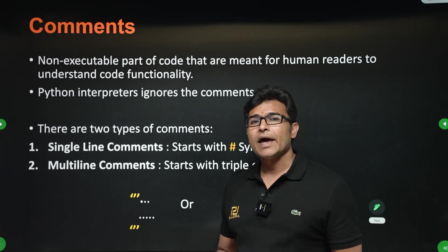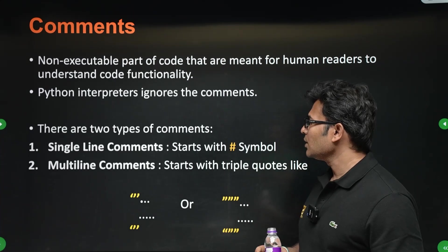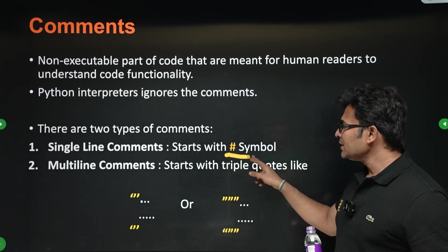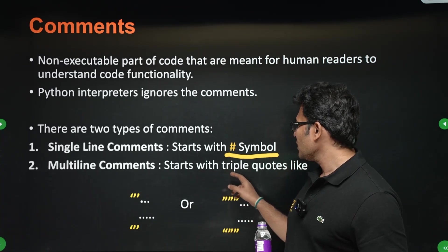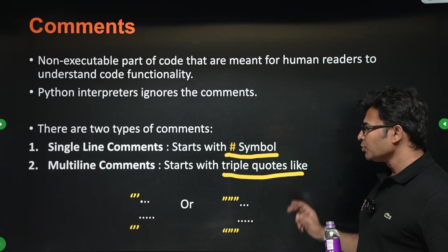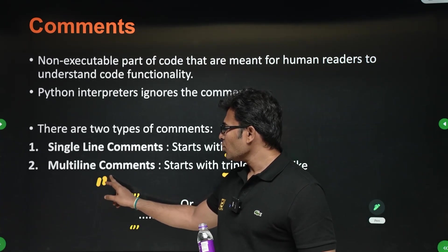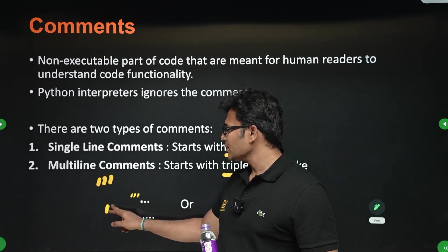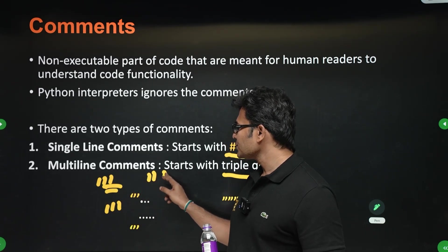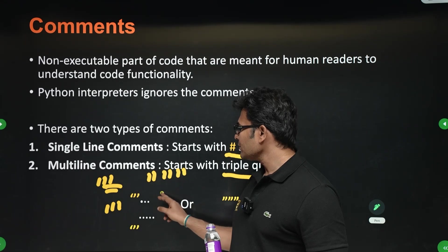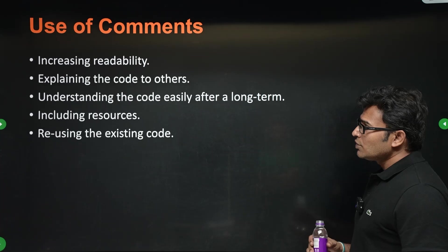Anyway, the compiler will ignore comments — they are useless for the compiler, it will only compile the actual program. There are two ways to give comments: one is a single-line comment using a hash symbol, and the second is a multi-line comment which starts with triple quotes — either three single quotes or three double quotes.